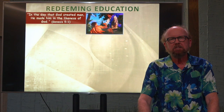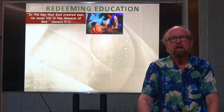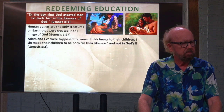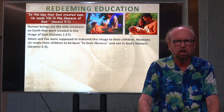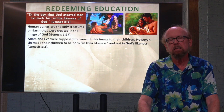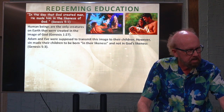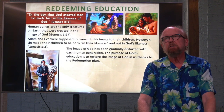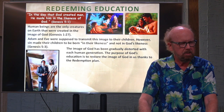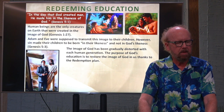As we examine redeeming education, we look at Genesis 5:1, and it tells us that in the day that God created man, he made him in the likeness of God. Human beings are the only creatures on this earth that are created in the image of God, according to Genesis 1:27. Adam and Eve were supposed to transmit this image of God to their children, but because of sin, their children were born in their likeness and not in the likeness of God. We find this in Genesis 5:3. The purpose of God's education is to restore the image of God in us, thanks to the plan of redemption.